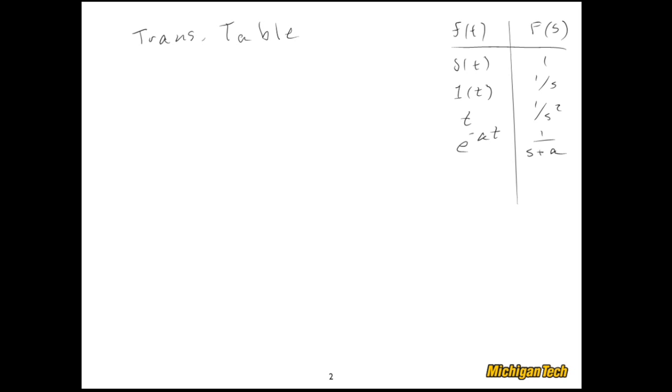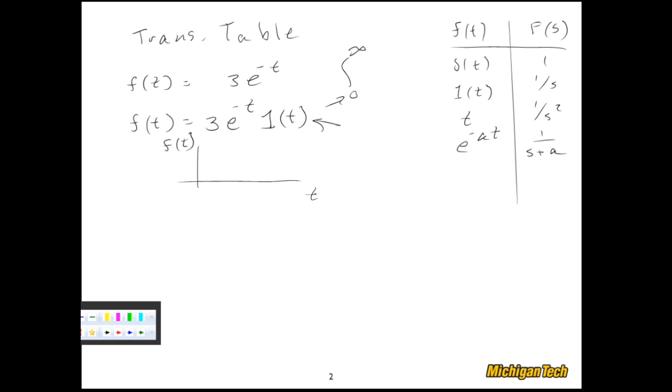Now, a lot of times, when we're Laplace transforming a function of time, and let's say that we were going to Laplace transform f of t equals 3 e to the negative t. Now, that function has values for negative t through positive t. But if you remember, the Laplace transform is an integration from 0 to infinity. So just to keep it all straight and consistent, when we're describing our functions that we're Laplace transforming, oftentimes we'll multiply them by a unit step. What that means is it sort of reminds us that this function of time is 0 for negative time, like so. And then, in this case, it would jump up to 3 and decay out.